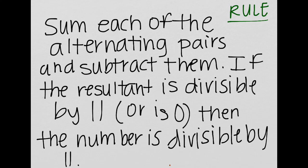So here's the rule. Sum each of the alternating pairs and subtract them. If the resultant is divisible by 11 or is 0, then the number is divisible by 11.